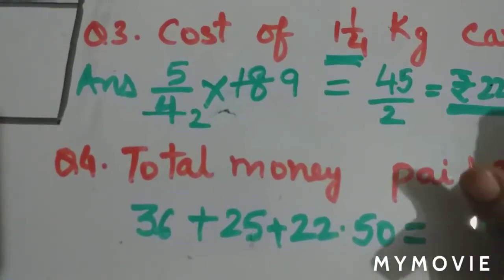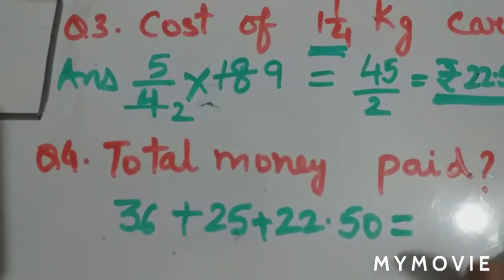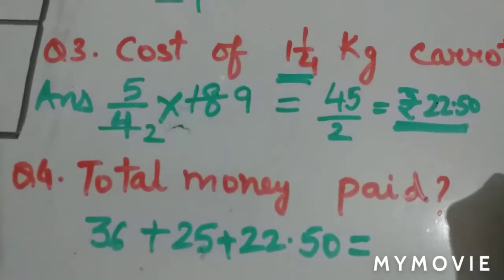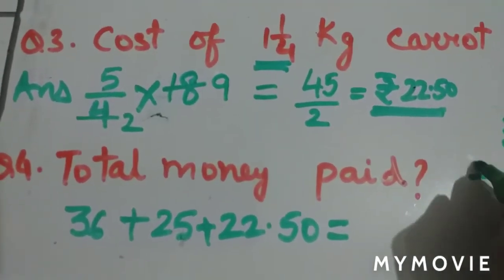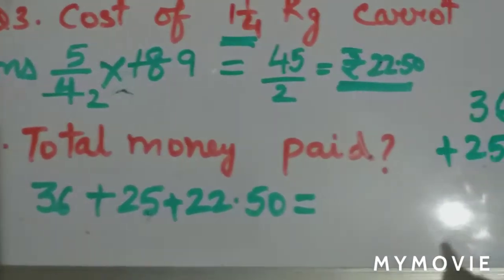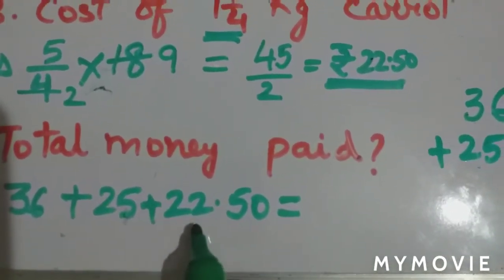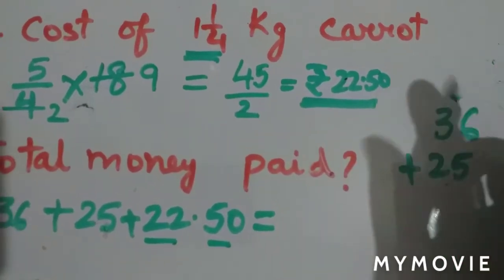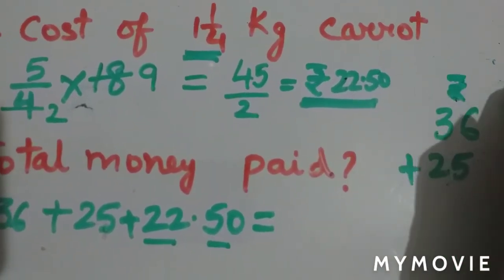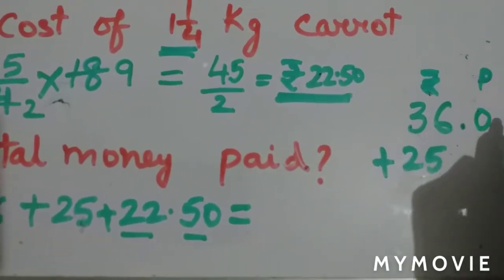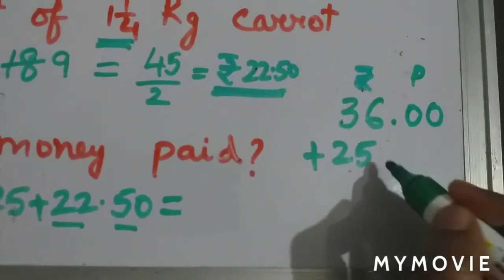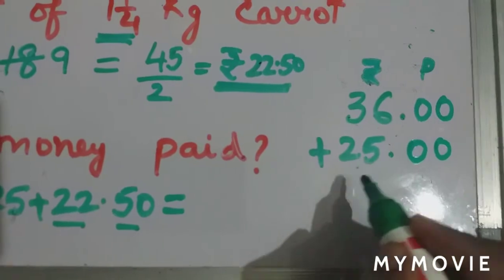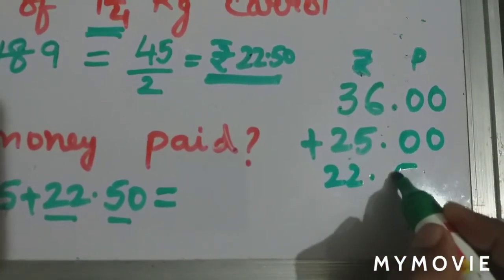Just simply add it. You can add it in the rough work. 36 plus 25 plus 22.50. This is rupees and this is paise, so you can write 36 rupees like this, 25 rupees like this, and 22 rupee 50 paise like this.